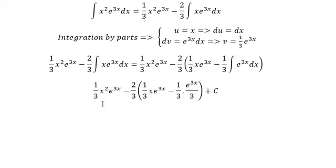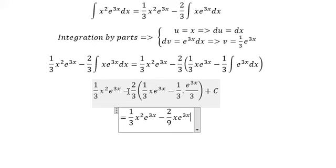Now we just simplify this one. 2 over 3 multiplied by 1 over 3, you got 2 over 9x e power 3x. Because we have the negative outside, and we have the negative, so this should be positive number.